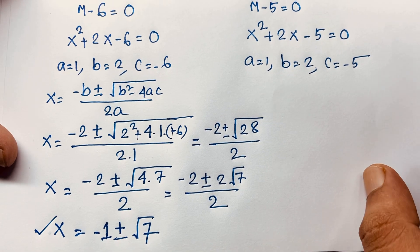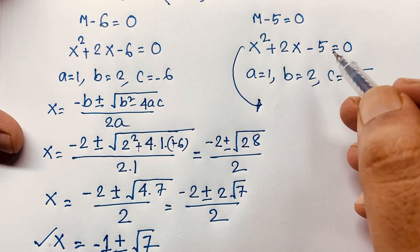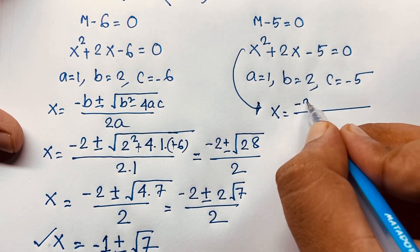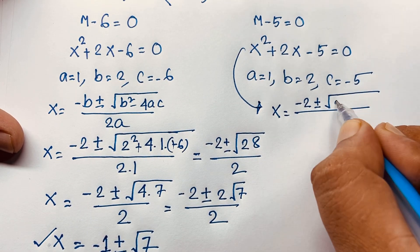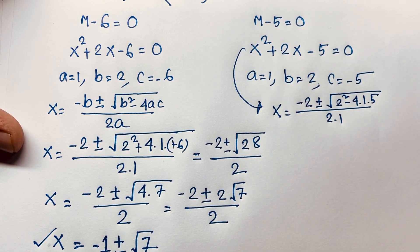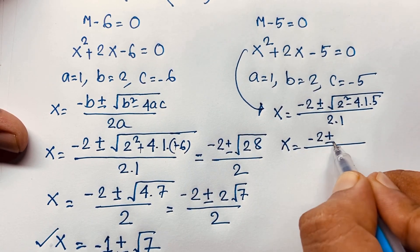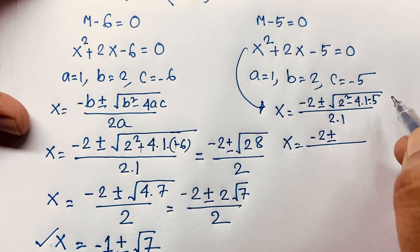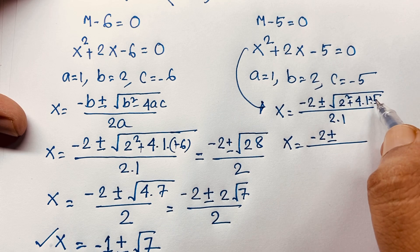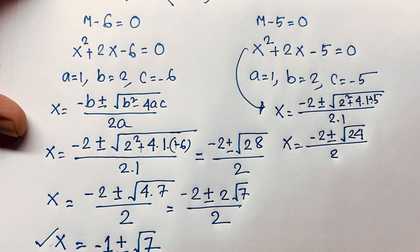Case 2: m minus 5 equals 0, so m equals 5. Substituting m equals x squared plus 2x gives x squared plus 2x minus 5 equals 0. With a equals 1, b equals 2, c equals negative 5: x equals negative 2 plus or minus square root of (4 plus 20) over 2, which is square root of 24 over 2.